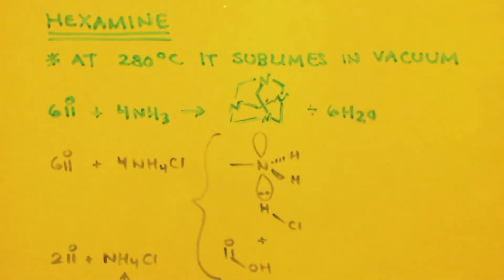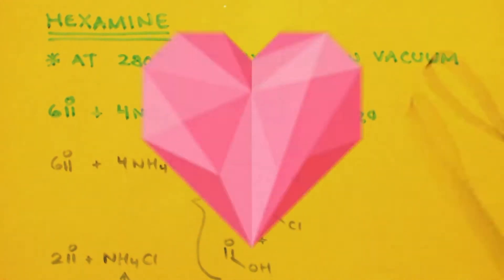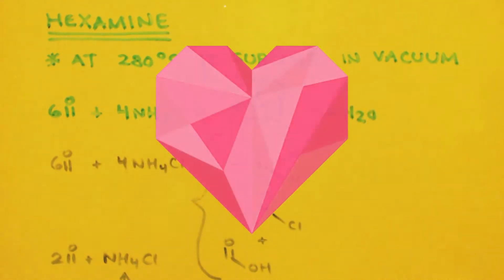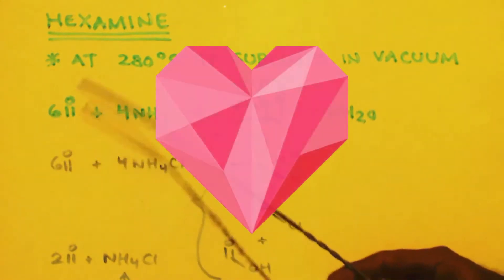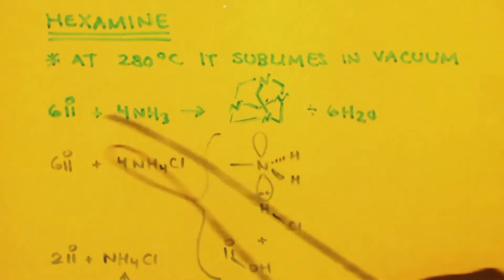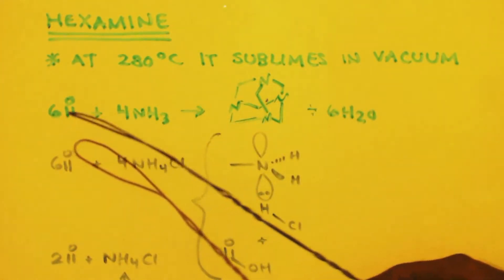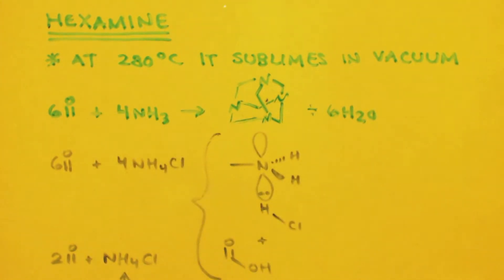Here's a picture of hexamine. 280°C it sublimes in a vacuum. Look at how you make this: you would have six moles of formaldehyde, four moles of ammonia, and you'd make some hexamine and some water.